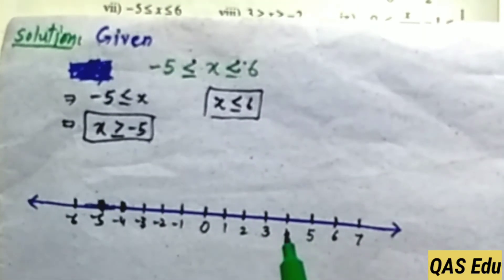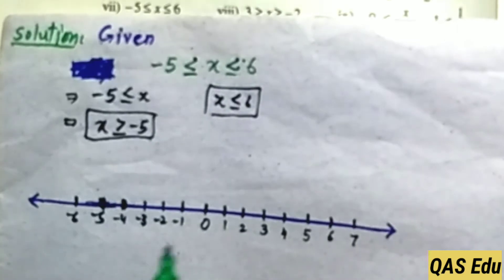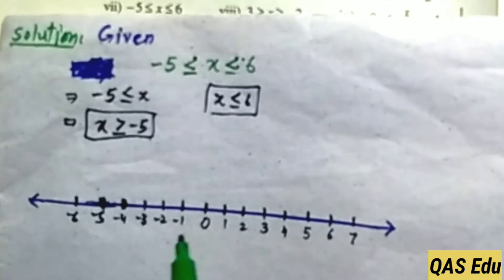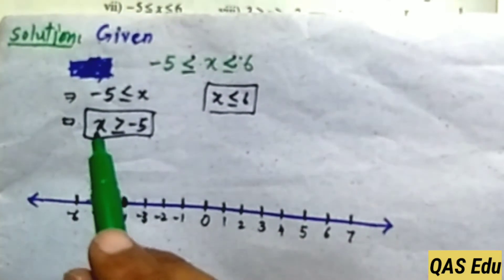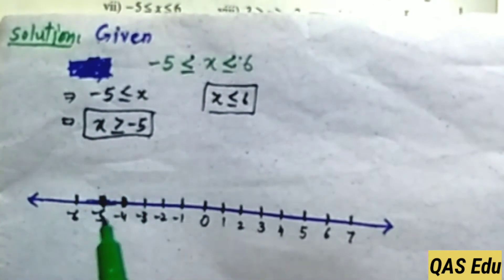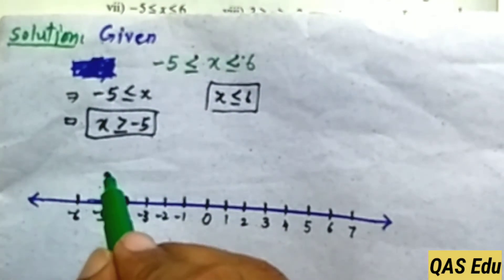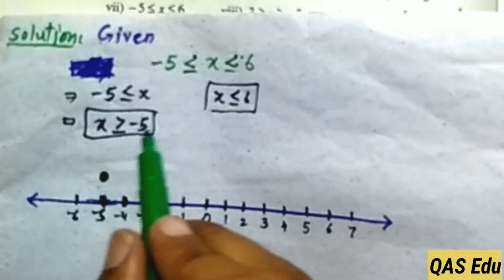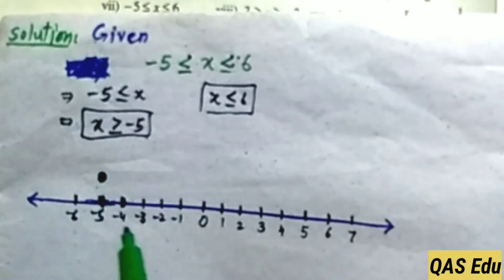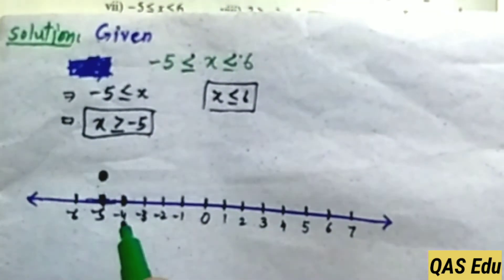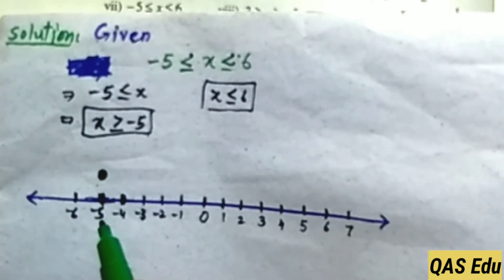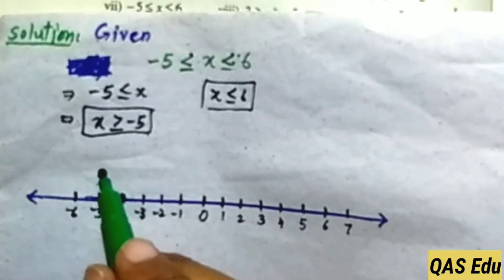Try to keep equal distances between numbers on the number line; use a ruler for better accuracy. For x is greater than or equal to minus 5: since x equals minus 5, draw a bold (filled) circle at minus 5. Values greater than minus 5 are minus 4, minus 3, minus 2, minus 1, and so on — draw an arrow to the right.